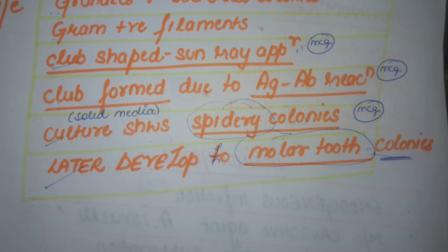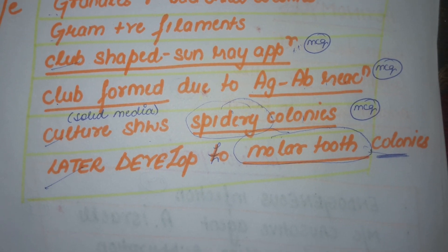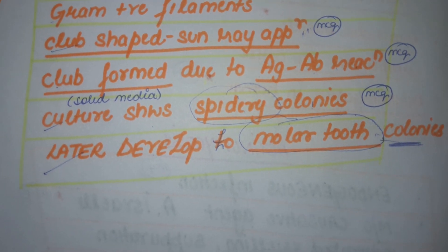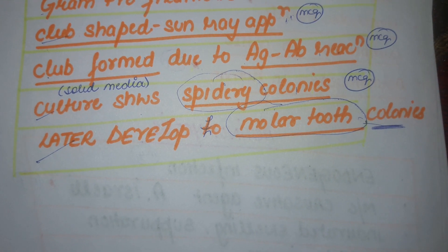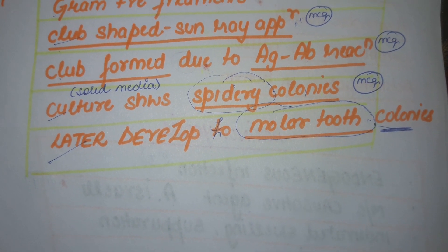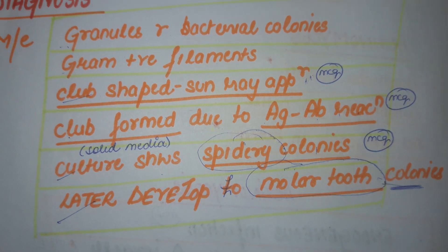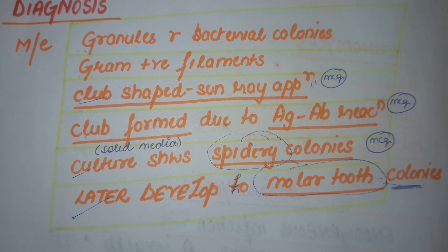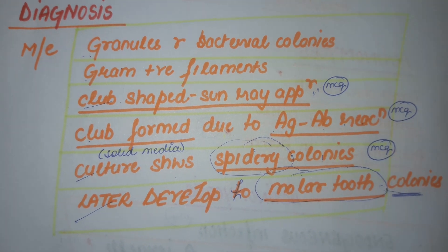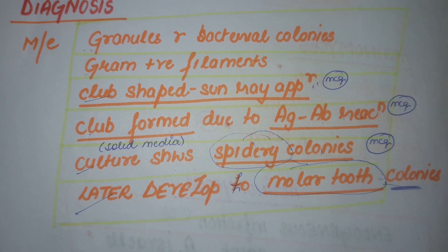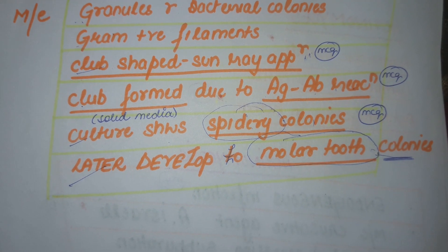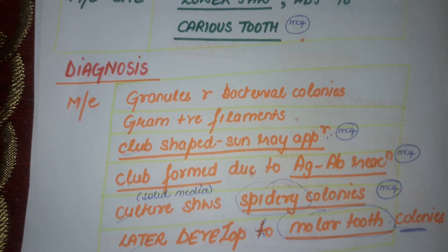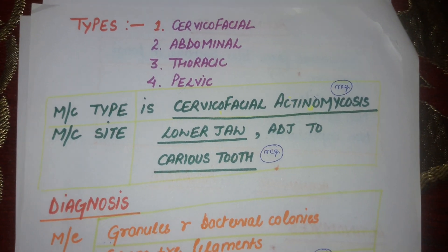Mark it as well. Now if we culture these organisms on solid media, it will show spidery colonies, which will later on develop into molar tooth colonies — again an important point. So on microscopic examination the main features are granules, gram-positive filaments, club-shaped appearance, and spidery colonies getting converted into molar tooth colonies. Make your notes as it is and you'll be ready for your exams.